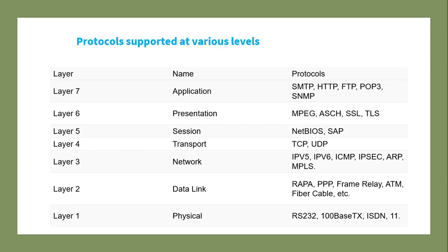Multiple protocols work at various layers. At layer 7 (application): SMTP, HTTP, FTP, POP3, and SNMP. At layer 6 (presentation): MPEG, JPEG, SSL, and TLS. At layer 5 (session): NetBIOS and SAP. At layer 4 (transport): TCP and UDP. At layer 3 (network): IPv4, IPv6, ICMP, ARP, and MPLS. At layer 2 (data link): PPP, frame relay, ATM, and fiber cable. At layer 1 (physical): RS-232, 100BASE-TX, and ISDN protocols.